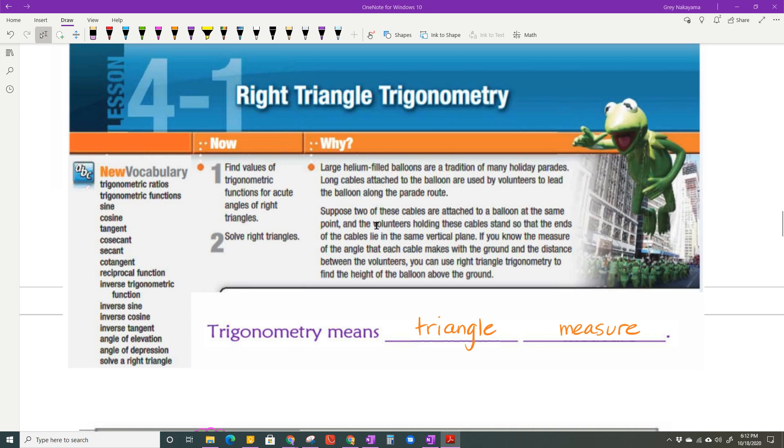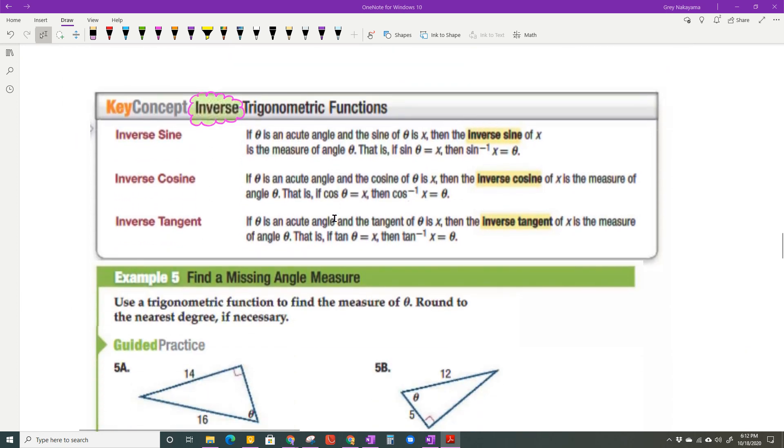To finish up objective 1, we're going to talk about inverse trigonometric functions. When you're finding the inverse, that means you're going to be looking for the angle now, and not the actual ratio.